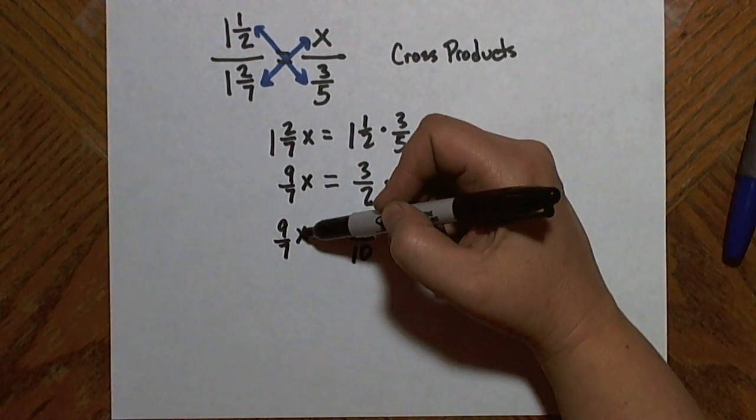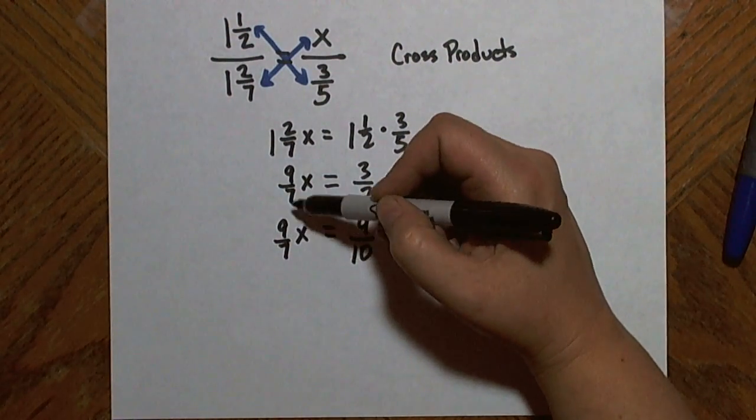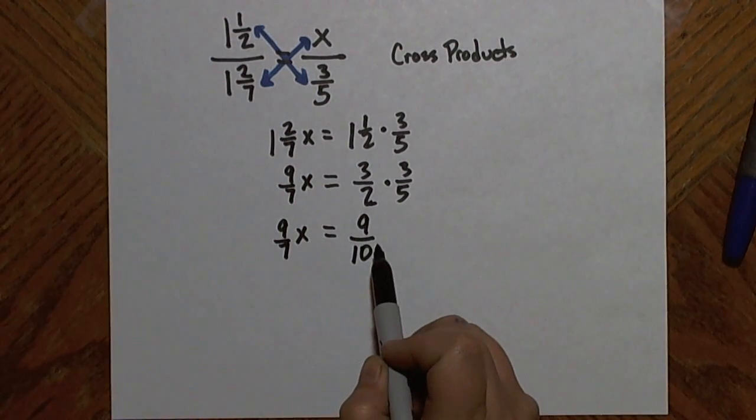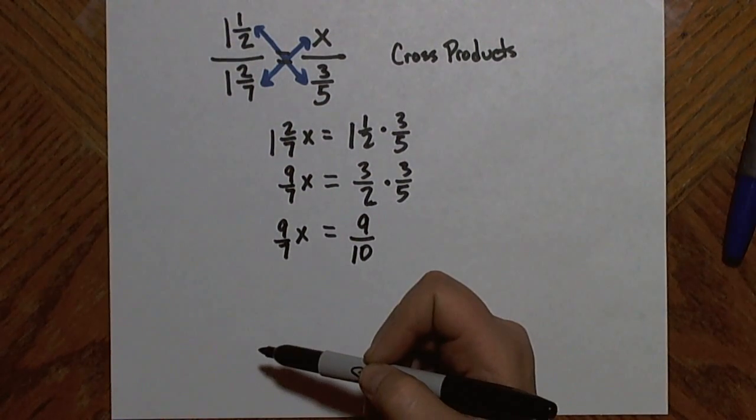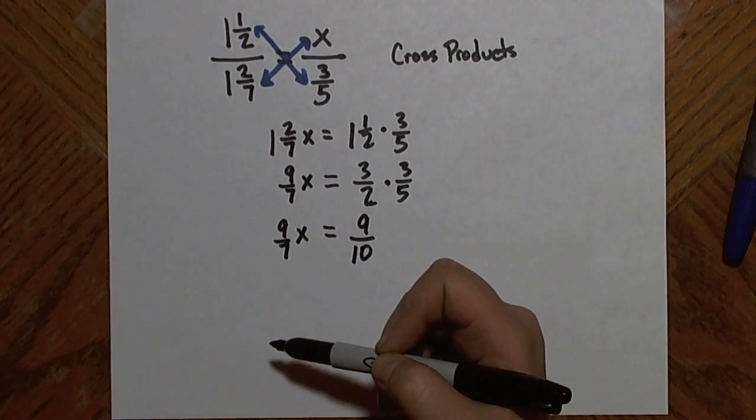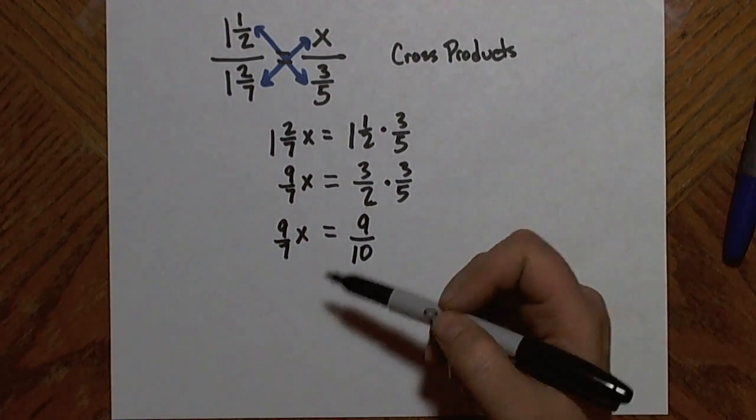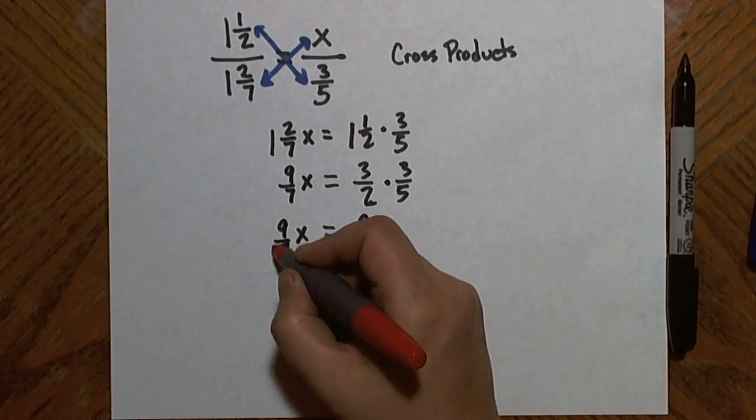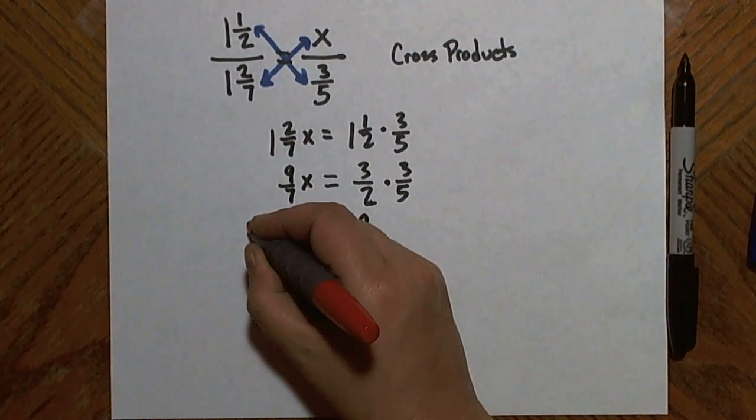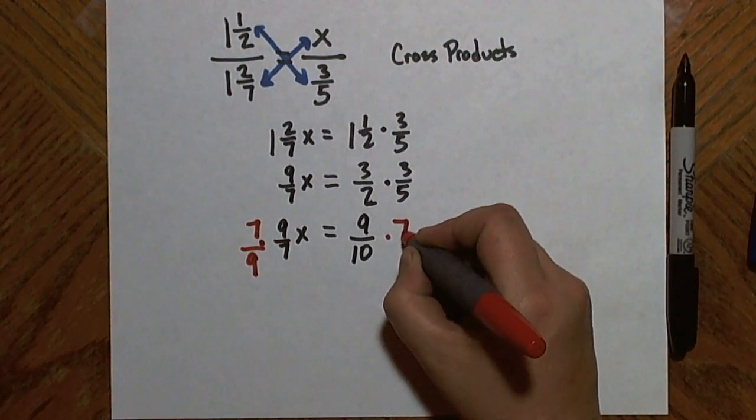So I still haven't solved for x by itself. I need to get rid of this number in front, this nine sevenths being multiplied. So I can divide both sides of the equation by nine sevenths. Since I'm dividing by a fraction, that is the same thing as multiplying by the reciprocal of the fraction. So what I can do is multiply both sides of the equation by the reciprocal of this fraction. So I'll multiply this side by seven over nine, and I'll do the same to the other side.